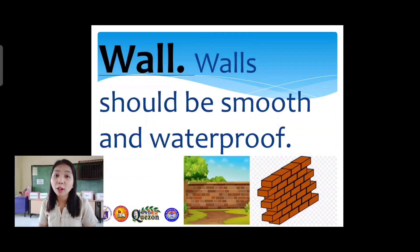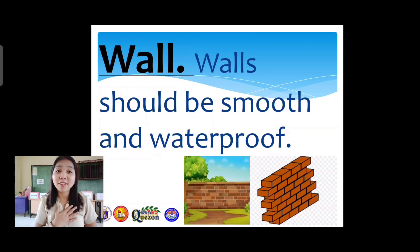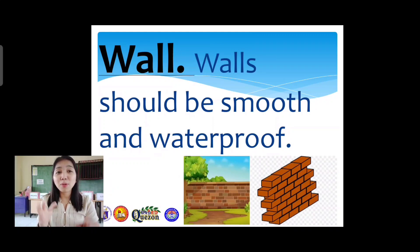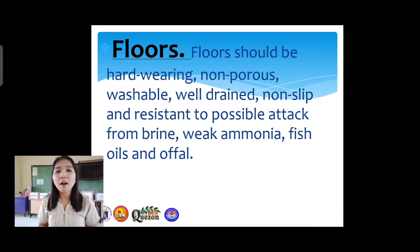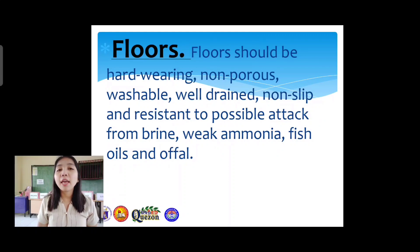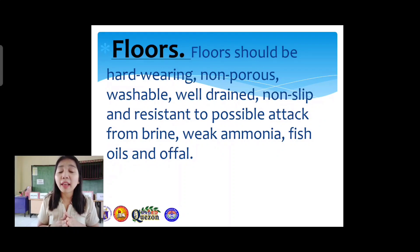Our first part is the wall. A wall should be smooth and waterproof — it protects us from danger, especially during rain or calamities. Second are the floors, where we step on. Floors should be hard-wearing, non-porous, non-slippery, washable, and well-drained.